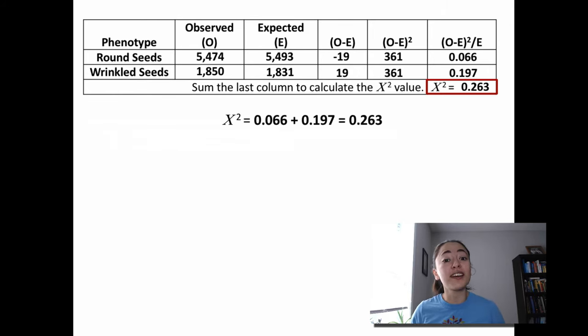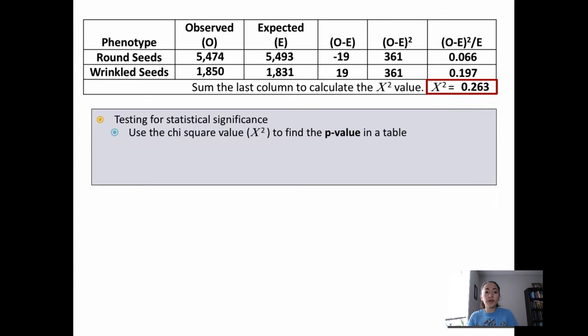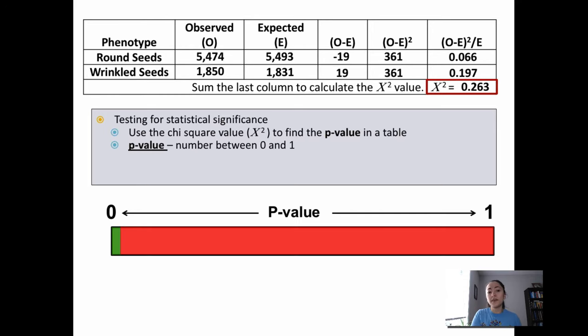Now we can't stop here. Next, we have to find our p-value. You will use the chi-square value you just calculated to find the p-value in a table. The p-value is always a number between 0 and 1. The p-value is necessary because it tells us whether or not there's a difference between our observed and our expected values. So we need this p-value to do the statistical test.